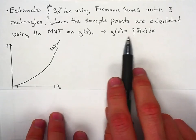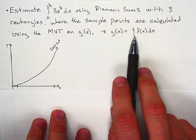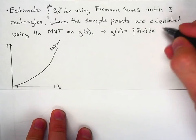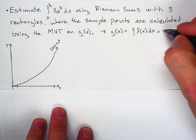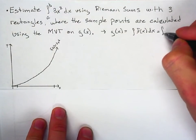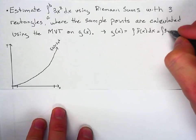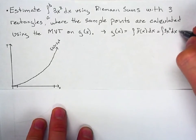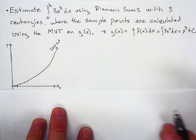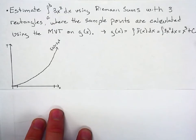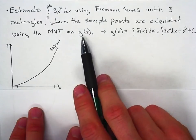g of x is, as defined previously with FTC, the integral of f of x dx. That means we're doing the integral of 3x squared dx, which equals x cubed plus c. So that's the g of x we're referring to here.